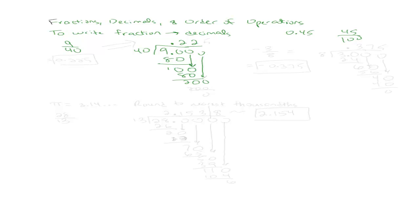Bring down another zero. Does 40 go into 200? Five times with no remainder. So this is how we convert a fraction to a decimal. We're just gonna take the fraction, write it in long division, and divide until we have the complete decimal. So 9 over 40 is the same thing as 0.225.